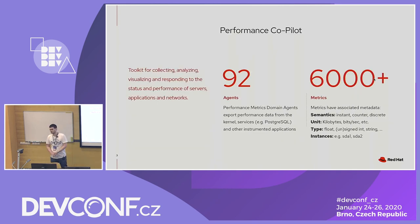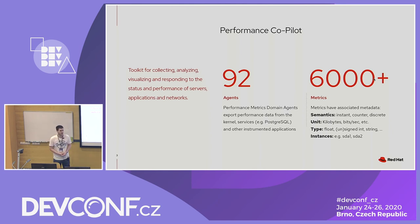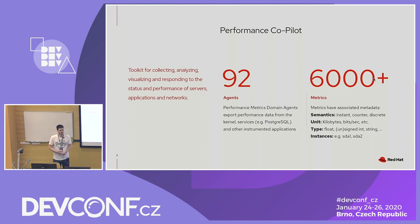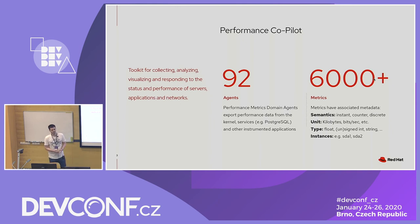Performance Copilot is a system performance analysis toolkit. It consists of multiple components. One component is the agents — we call them Performance Metrics Domain Agents — and they are responsible for getting performance metrics from one source. For example, we have one agent for PostgreSQL, one for GlusterFS, one for Microsoft SQL Server, and we have around 92 agents. The latest new agents we wrote are one for BCC, that's the eBPF compiler collection, and another agent to get metrics from BPFtrace scripts.